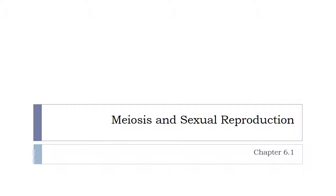Now that we've talked about mitosis, let's talk about something a lot like it but with some major differences — because it helps make sex cells. We're jumping ahead to chapter six, section one, while everything we just talked about was in chapter five. But I want to talk about this first.